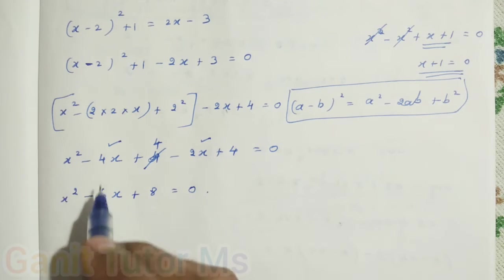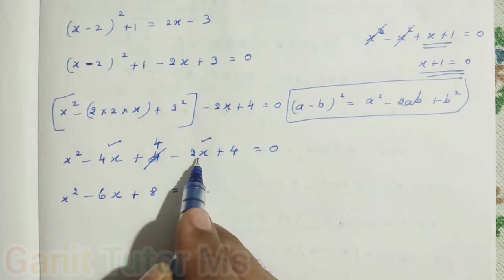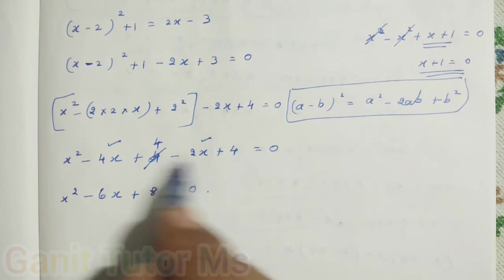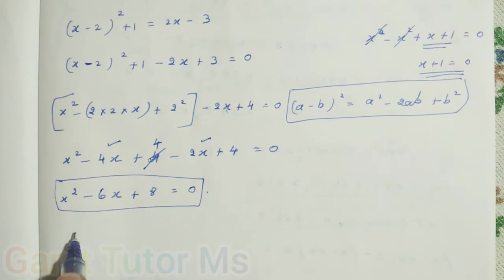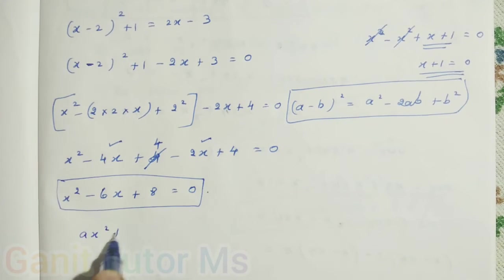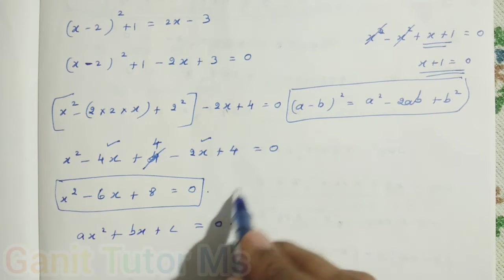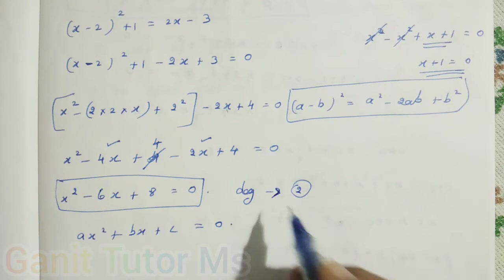Now, it is in a general form or not. That is x squared. Now, here 4x minus 4x minus 2x. So, minus 6x. Here, plus 4 plus 4 plus 8. Same sign addition. So, now, it is in a general form. It is in a form of ax squared plus bx plus c equal to 0. Now, what is the degree of this? Degree now is 2, right? So, degree is 2.